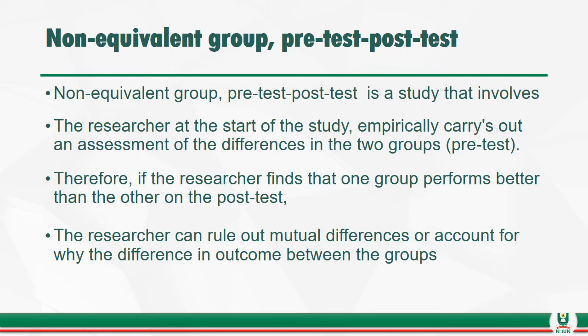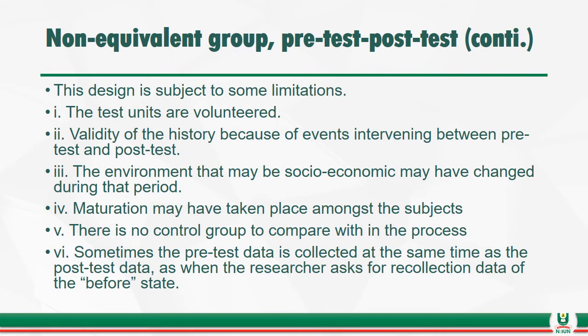If the researcher finds that one group performs better than the other on the post-test, the researcher can rule out mutual difference or account for why there is a difference in outcome between groups. This design is subject to some limitations: the test units are volunteered; there are validity threats from history, due to events intervening between pre-test and post-test; the socio-economic environment may have changed during that period; maturation may have taken place among the subjects; there is no control group to compare with; and sometimes the pre-test data is collected at the same time as the post-test data, as when the researcher asks for recollection of before.